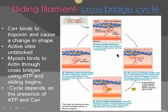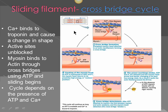Now the energized myosin attaches to the active sites on actin and pulls it toward the center. After pulling, it detaches and must attach to another ATP molecule, hydrolyze it into ADP, and then attach again. This attachment and detachment cycle keeps going as long as ATP and calcium are present.